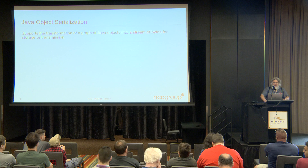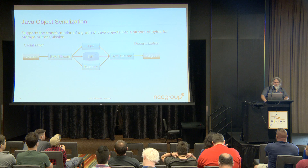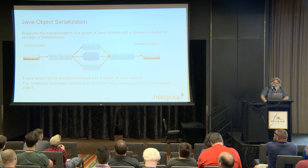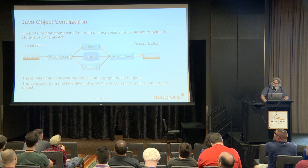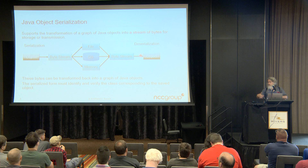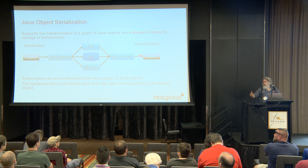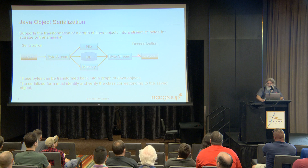Java serialization in general supports transformation of a graph of objects into a stream of bytes, which can be stored or transmitted. You have objects which are serialized; the serialized data can be stored in a file, database, or maintained in memory, and then objects can be reconstituted from the serialized data. The serialized form has to identify and verify class information — there's no source code transmitted, just information about the actual objects. To reconstitute these objects, source code has to be available to the JVM that's deserializing them, loaded normally via the class path.